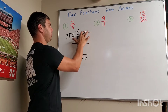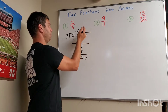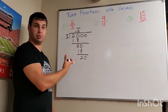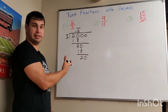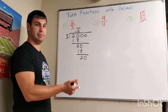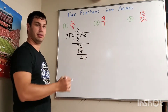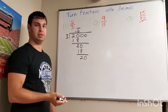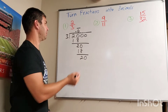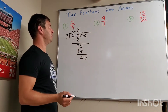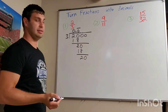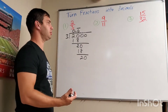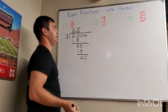You only have to write the numbers that repeat — whether it's one digit, like 6 in this case, or multiple digits — and put the line over all the numbers that repeat. In this case, just the 6. So 0.6̄ is the decimal that corresponds to 2 thirds. What about 9 over 11?